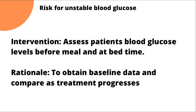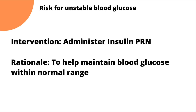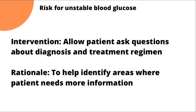Obtaining baseline data allows you to know the actual blood glucose level when treatment started, so you can compare over time and determine whether the patient is responding to treatment. While on admission, administer insulin as indicated and when required (PRN). The rationale is to help maintain blood glucose within normal range. If levels are too high, the physician may prescribe insulin, and the nurse must comply with the rights of drug administration.